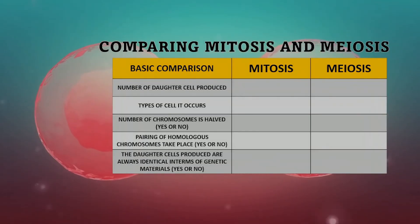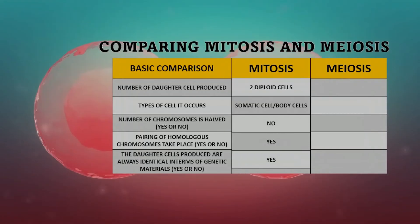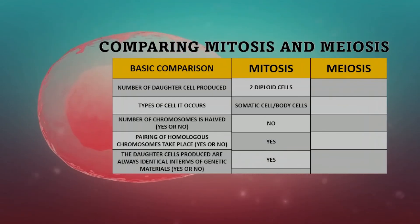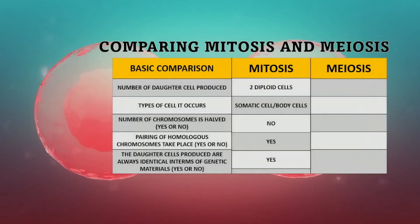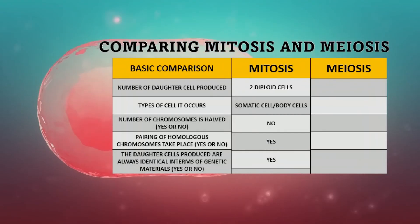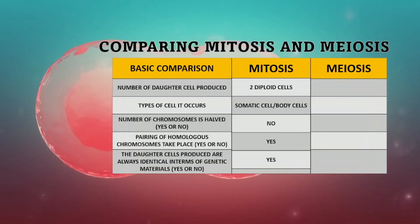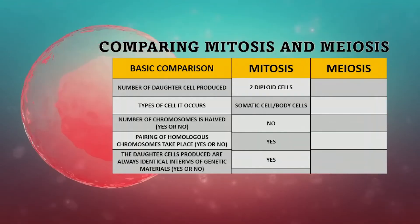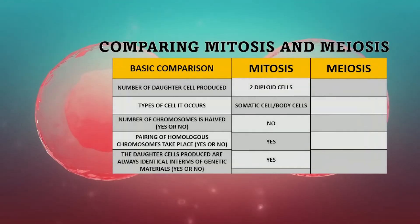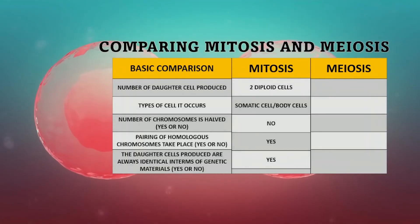And whether the daughter cells produced are always identical in terms of genetic material. Let's have mitosis: for the number of daughter cells produced in mitosis, it produces two diploid cells. For what type of cell mitosis occurs — in somatic cells or body cells. For whether the number of chromosomes is halved in mitosis, it's no. For pairing of homologous chromosomes — for mitosis it's yes. And for daughter cells produced being always identical in terms of genetic material, the answer for mitosis is yes.